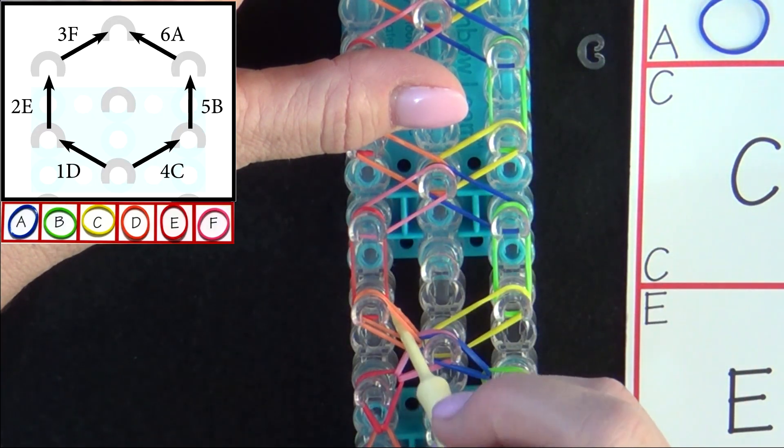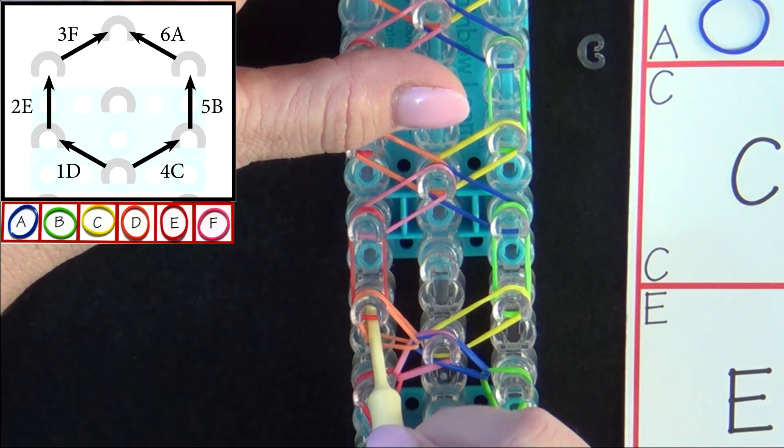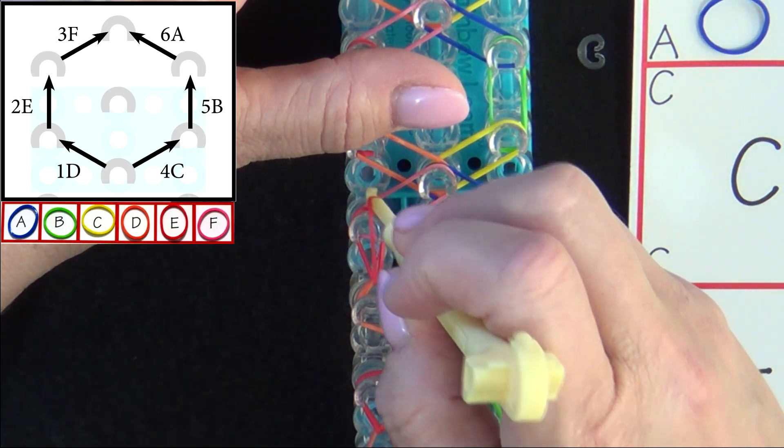2E will be looped forward. You can reach in here, swing it over, get the E band and pull it forward.